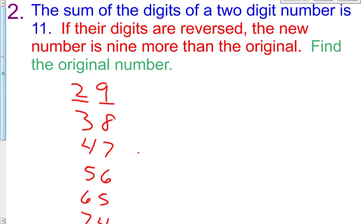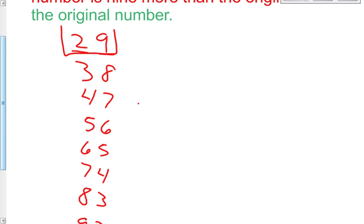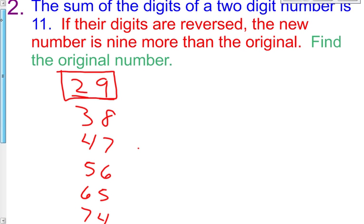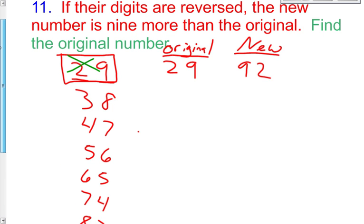The next question: If their digits are reversed, the new number is nine more than the original. So take a look at these two. 29, if these digits are reversed, we get 92. So now I ask you this question: is 92 nine more than 29? Obviously not. It is quite a bit more. So we know that 29 and 92 are not the right answer.